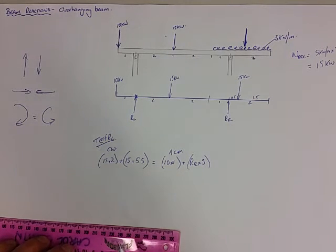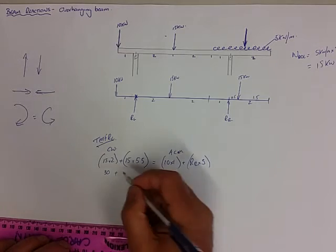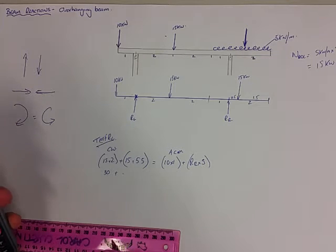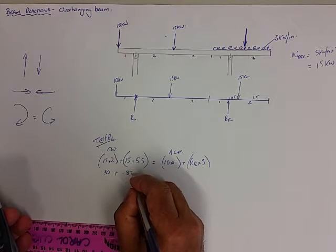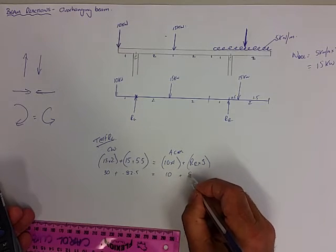So there's our equation with one unknown, so we can go through and start solving it now. So let's simplify things. 15 times 2 is 30, plus 15 times 5.5. I'll need the calculator for this. 15 times 5.5 equals 82.5 equals 10 plus 5R.